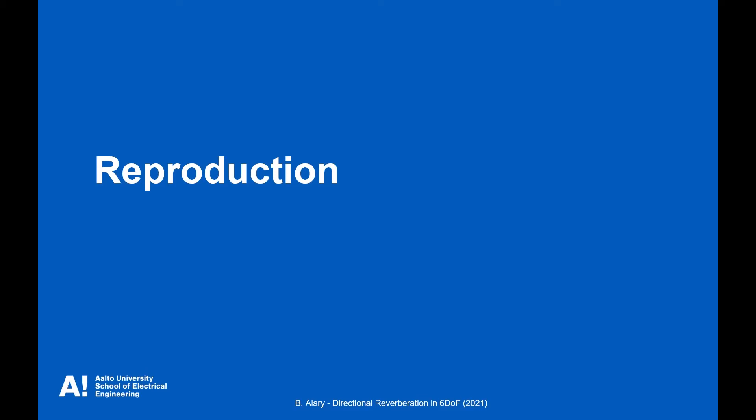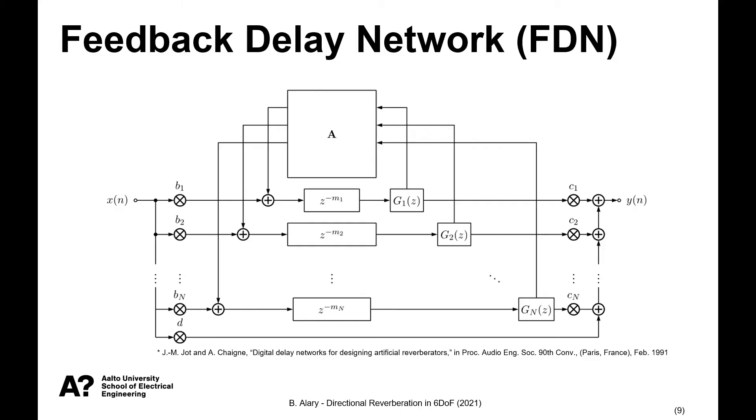Now let's discuss how we can reproduce these direction-dependent characteristics using an artificial reverberator. So if we start from a classic artificial reverberator, the FDN, we have a system composed of a network of delay lines of various lengths that are controlled by a series of gains at the input, gains, and the output. And in the recirculating path, we have a set of G filters that are frequency-dependent absorber filters controlling the decay in the system. And this A matrix is where we control how much energy for each delay line gets fed into the input of all the delay lines.